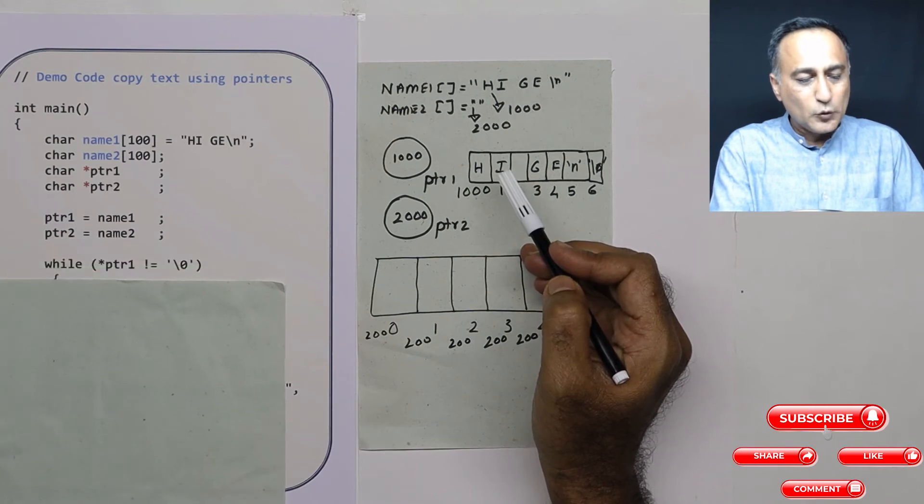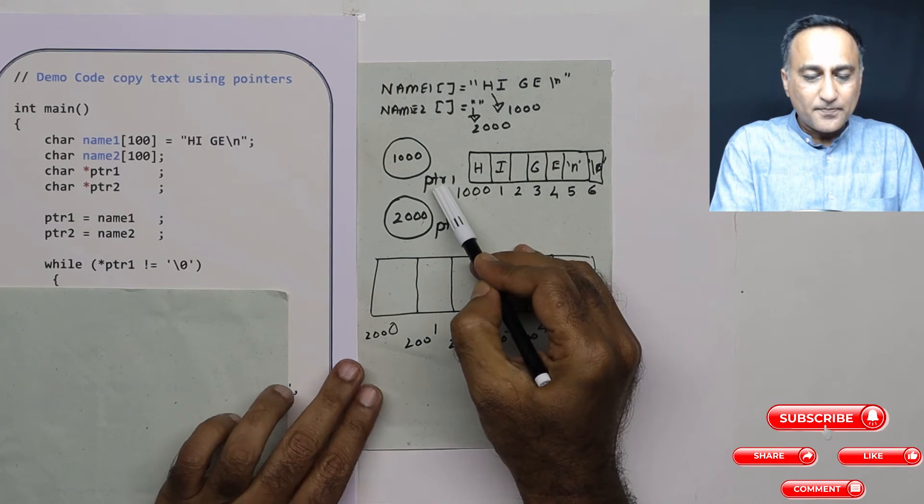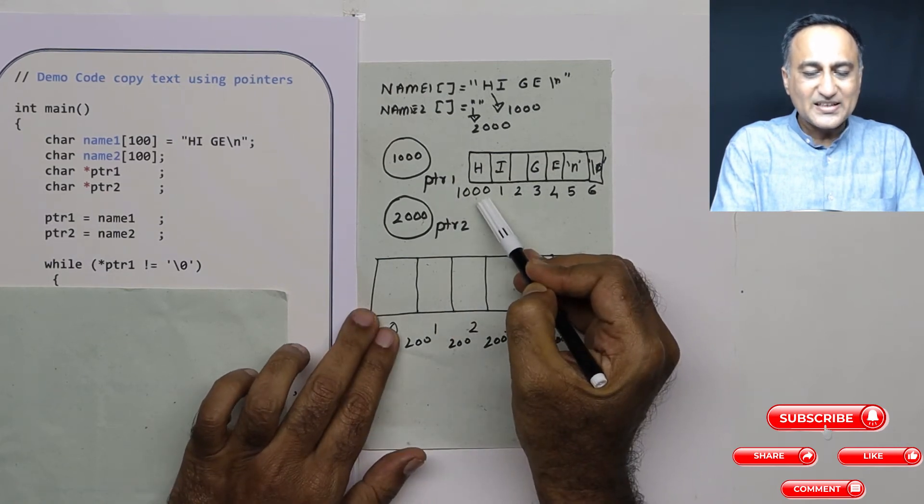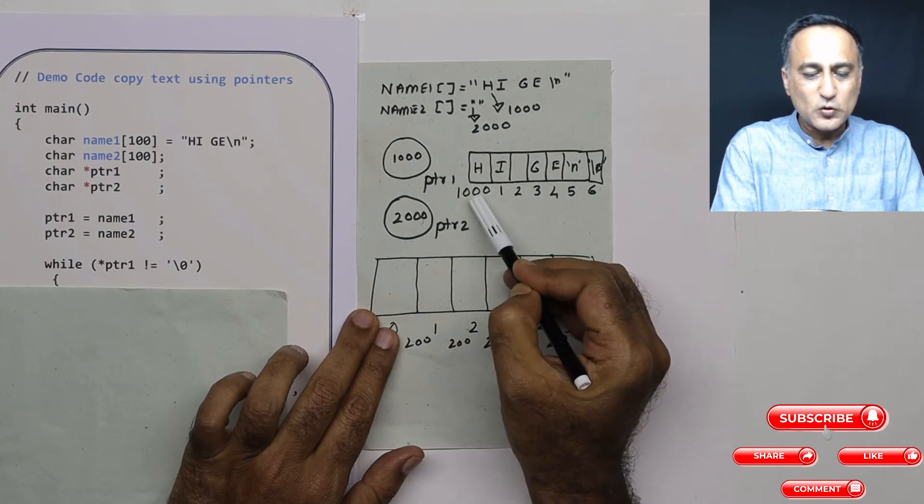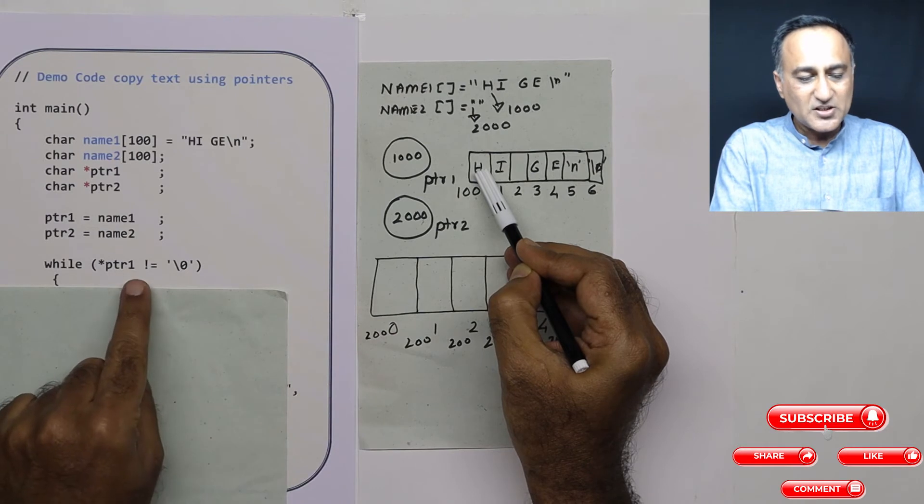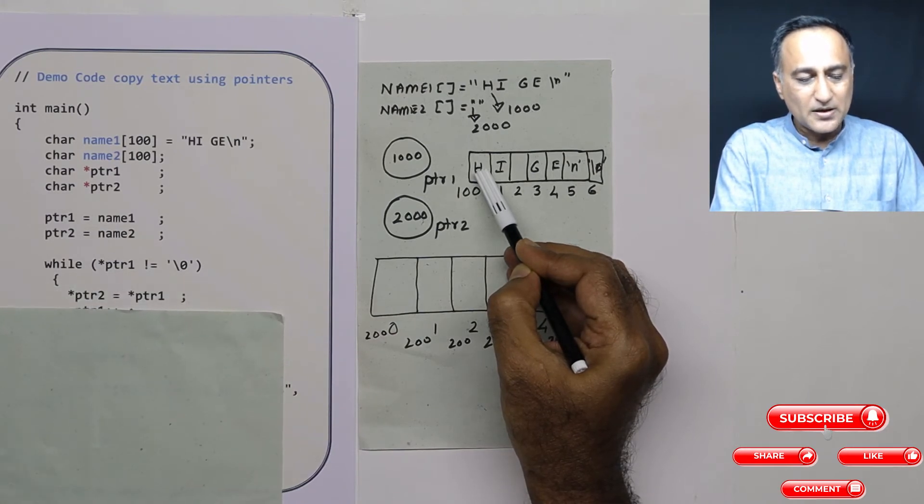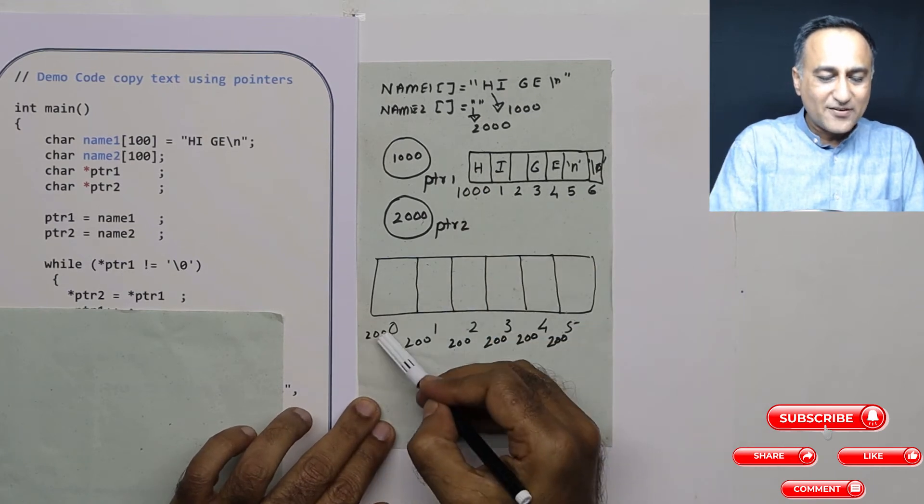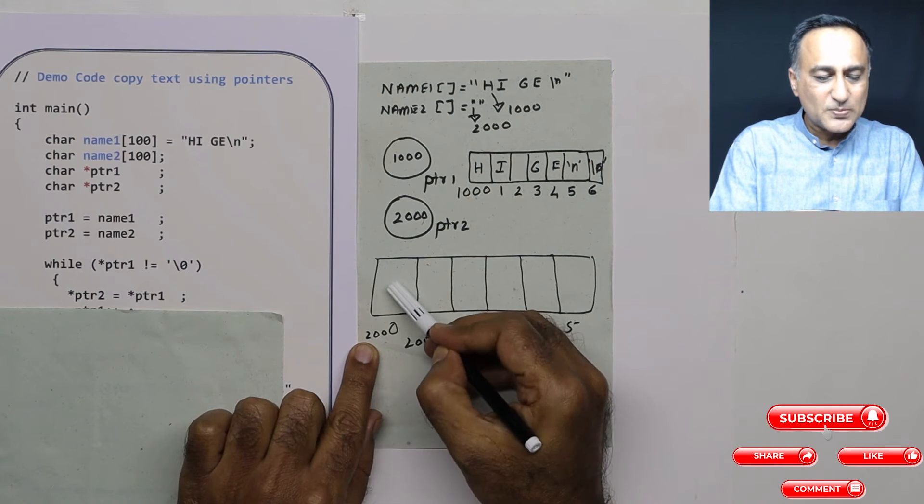Now just see what I am trying to do here. Now ptr1 contains the address 1000. When I apply a star to ptr1, it refers to value at address 1000, which happens to be h. So h is definitely not equal to null. So just see what I am doing here: ptr2 is referring to address 2000, star ptr2 is referring to this particular content.